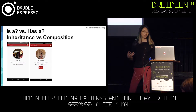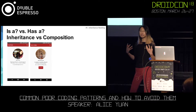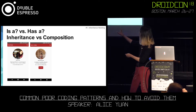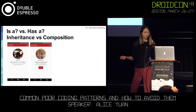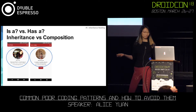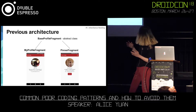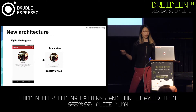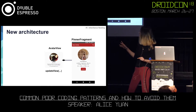So let's think about this example again. When we have these common components, does it make sense to use inheritance? When we think about inheritance, we should think about it as an 'is' relationship. Does it make sense for the avatar view to be an 'is' relationship with the fragments that we have? Or does it make sense for those fragments to have the avatar view? When you think about it logically, it makes a lot of sense — the relationship between the avatar view and the fragments should be a 'has' relationship. We should be using composition. So our previous architecture had the base fragment with my profile fragment and pinner fragment inheriting that. Our new architecture means that my profile fragment has an instance of the avatar view, and my pinner fragment also has an instance of the avatar view.